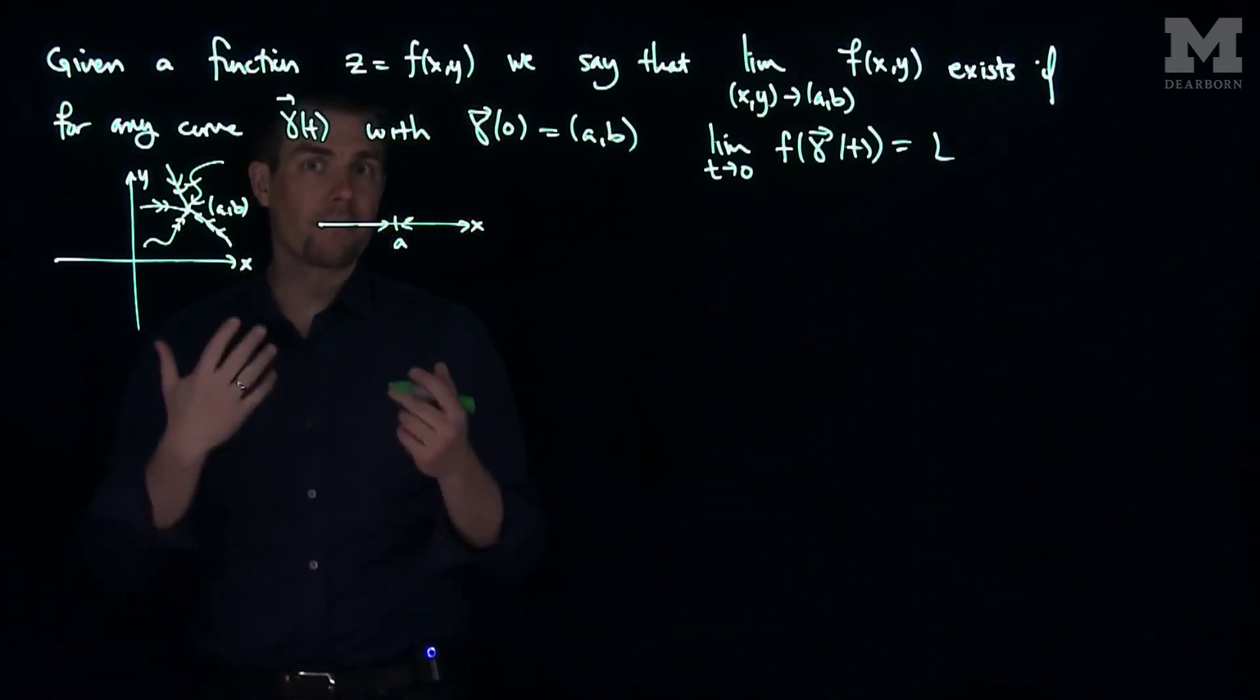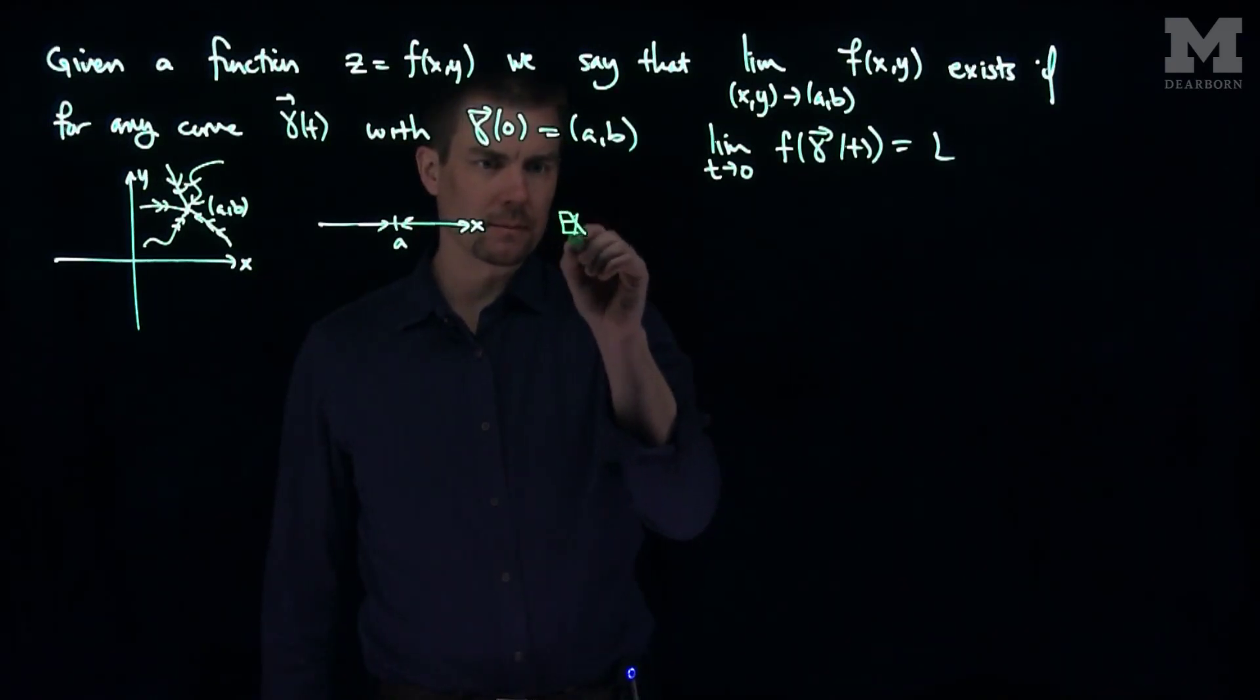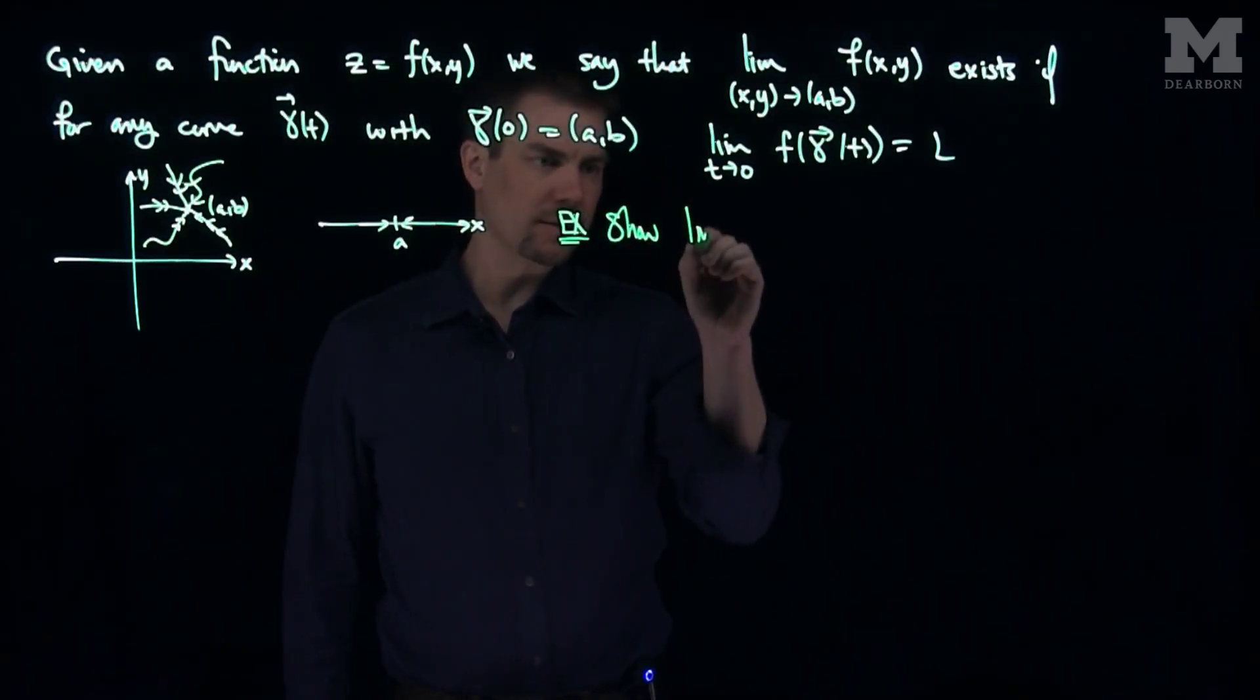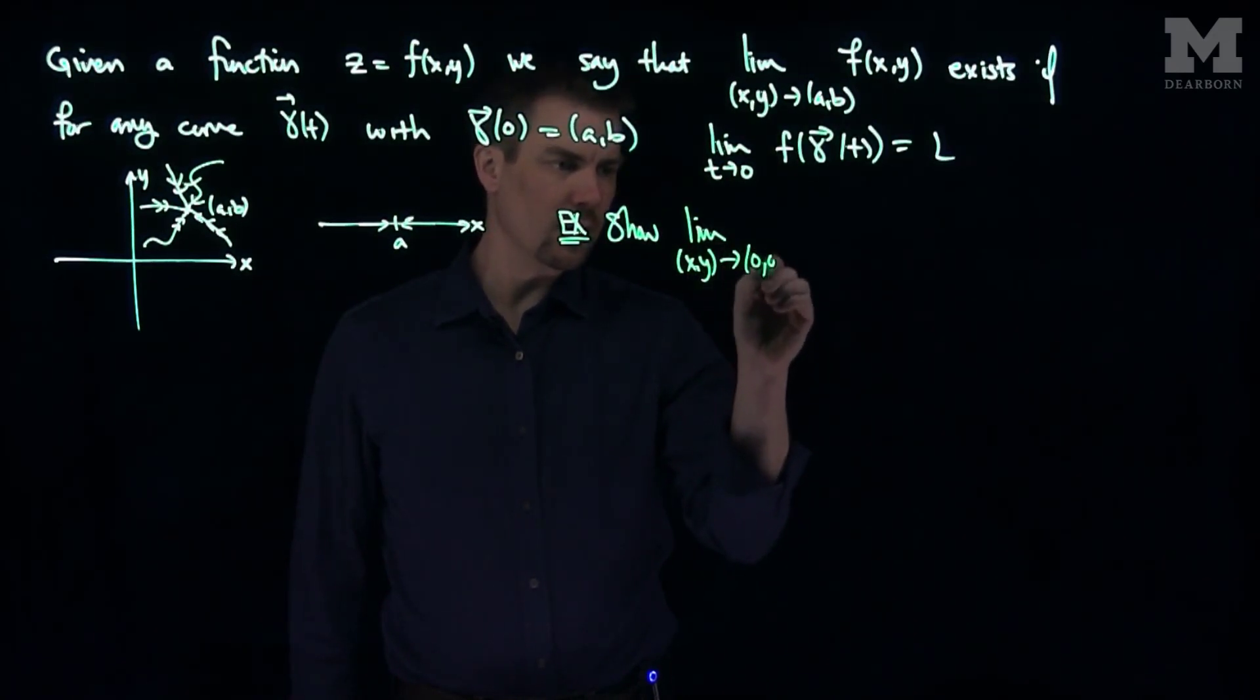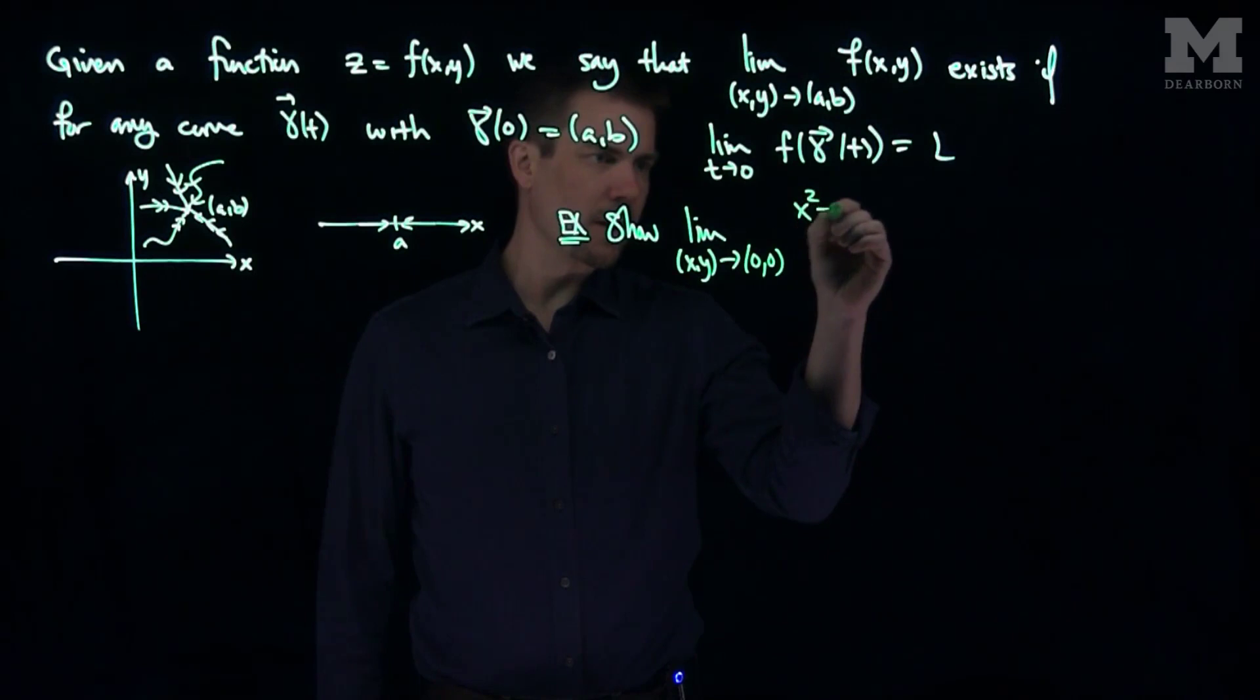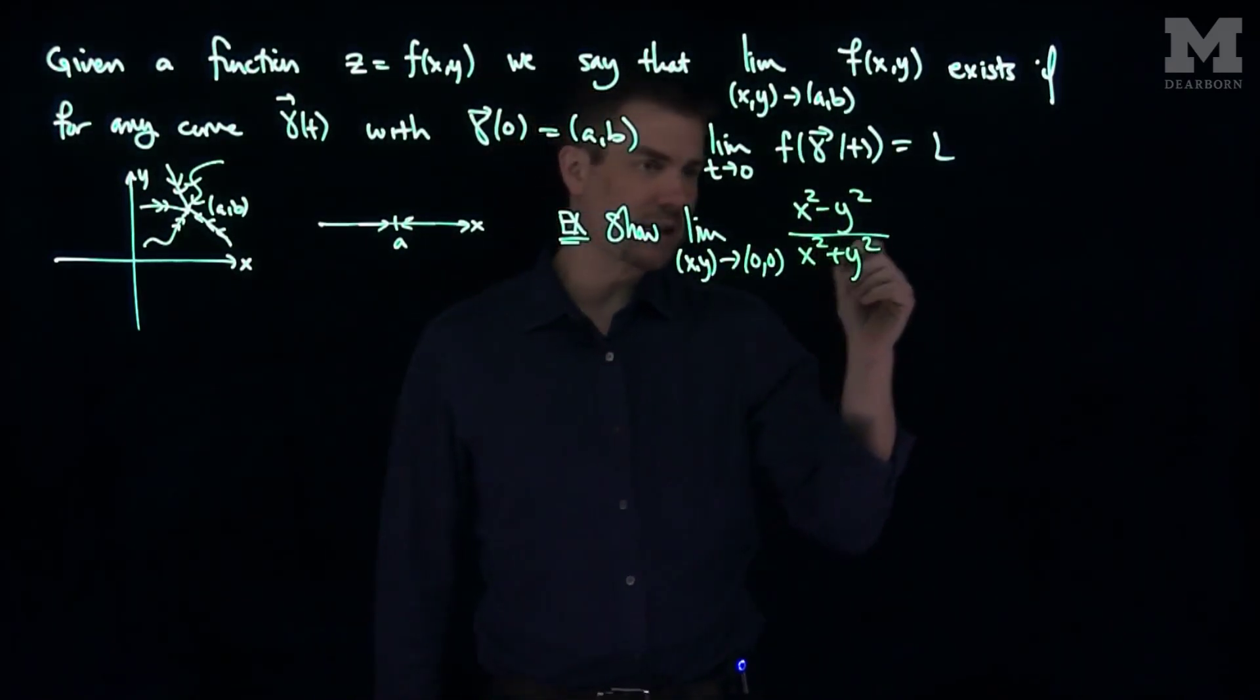Let's see an example of where a function would not have a limit. So here's an example. Let's show the limit as x, y goes to 0, 0 of x-squared minus y-squared over x-squared plus y-squared does not exist.